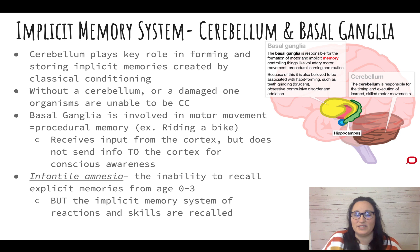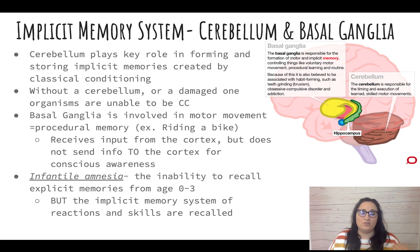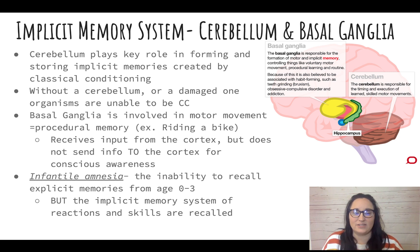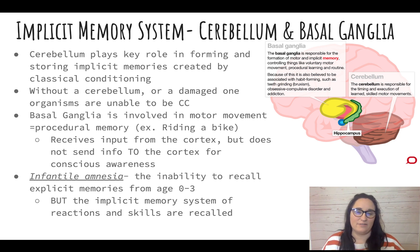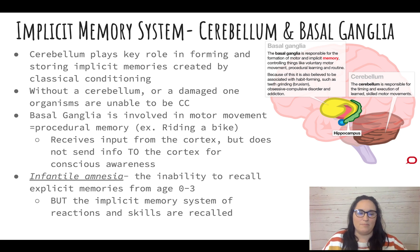The basal ganglia is involved specifically in procedural memory — something like riding a bike, a skill you don't need to consciously think about. It receives input from the cortex but doesn't send information back out to the cortex. The basal ganglia is also believed to be involved in habit-forming behaviors, like grinding teeth or picking at nails — things we're not consciously doing.